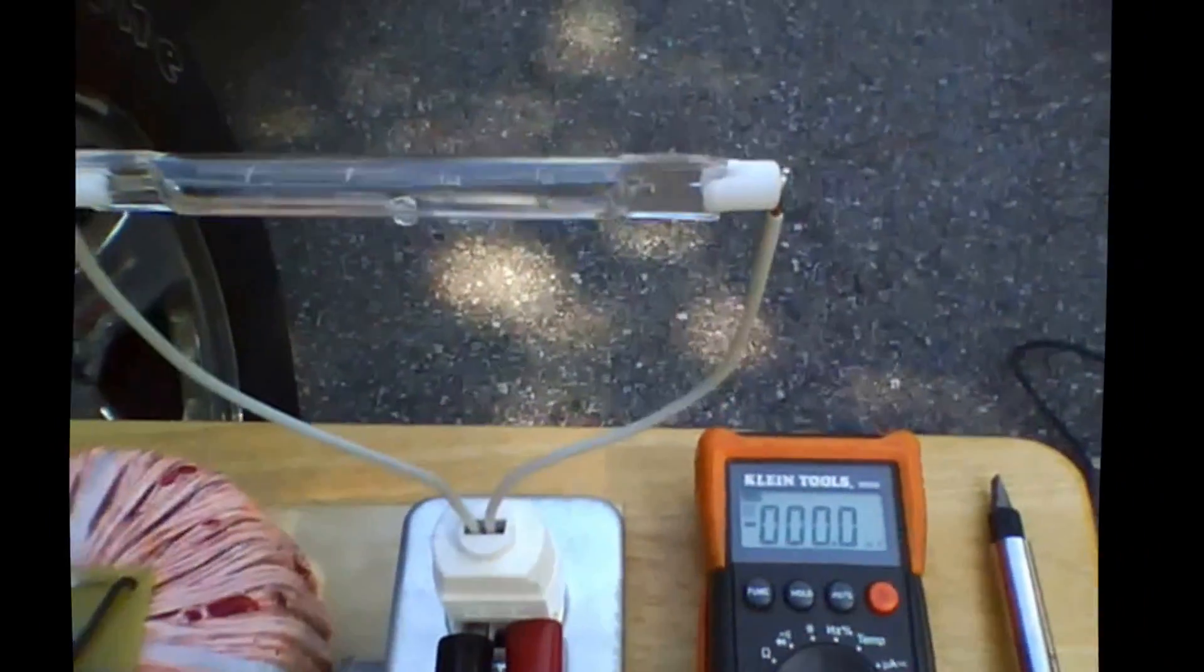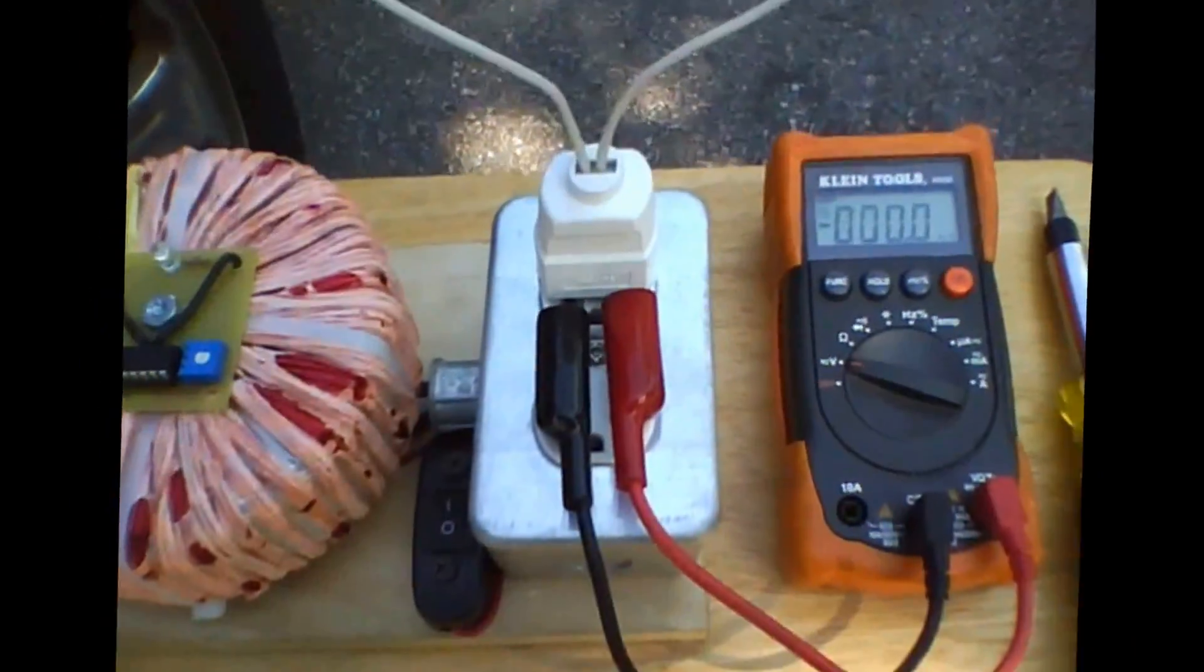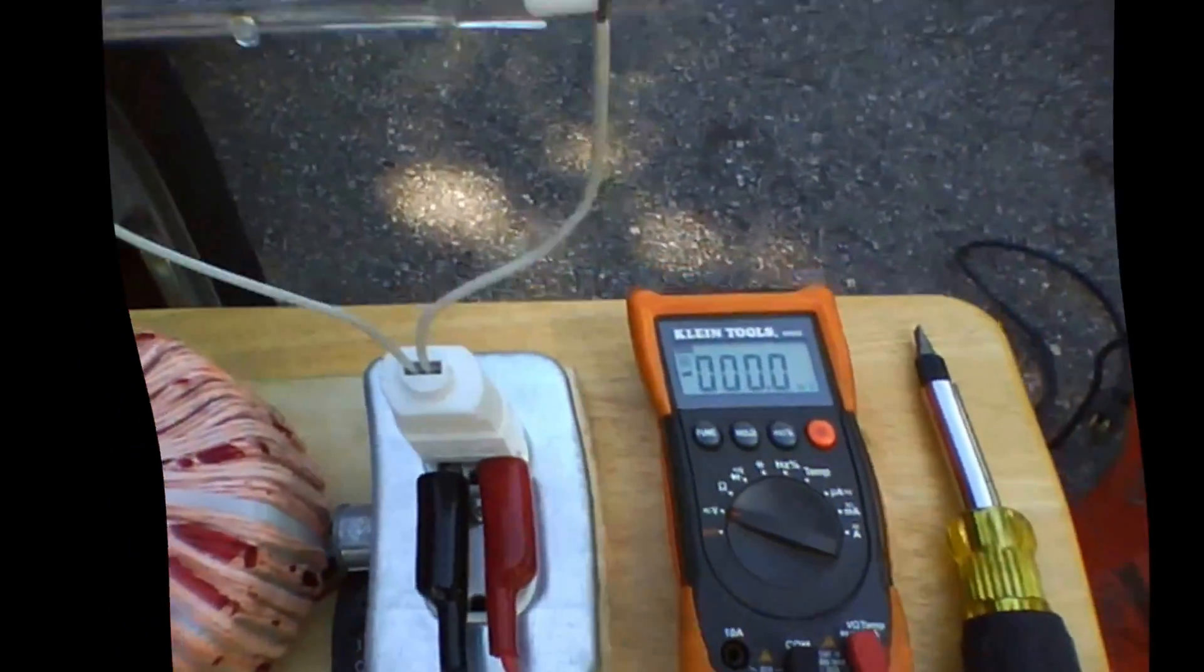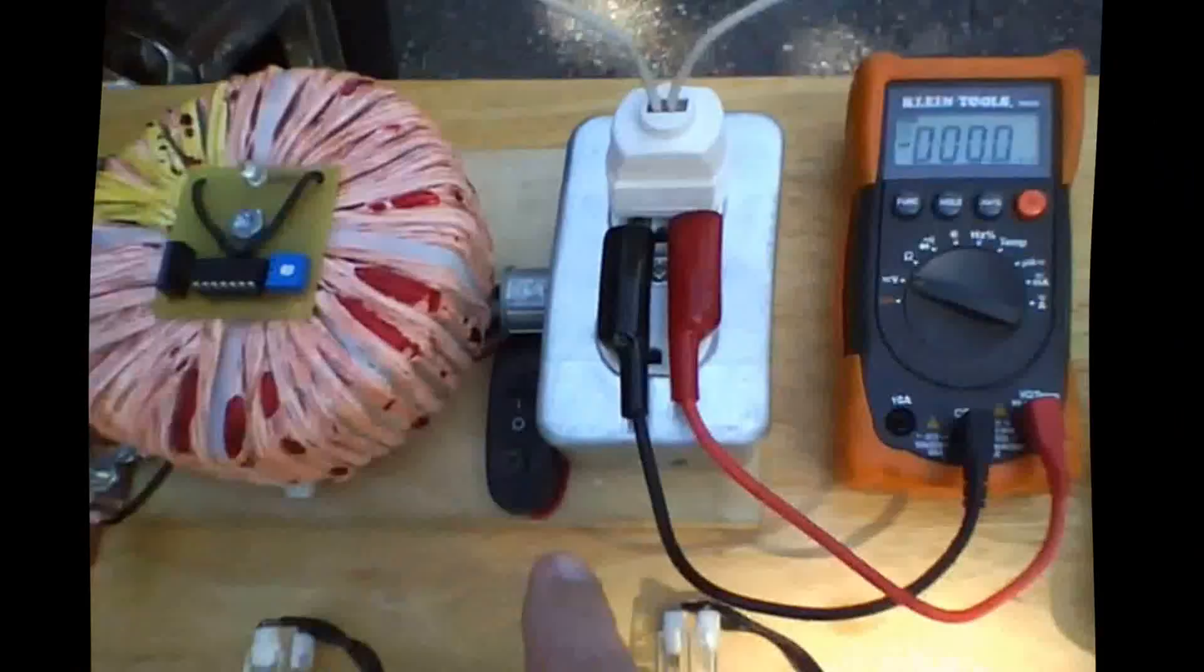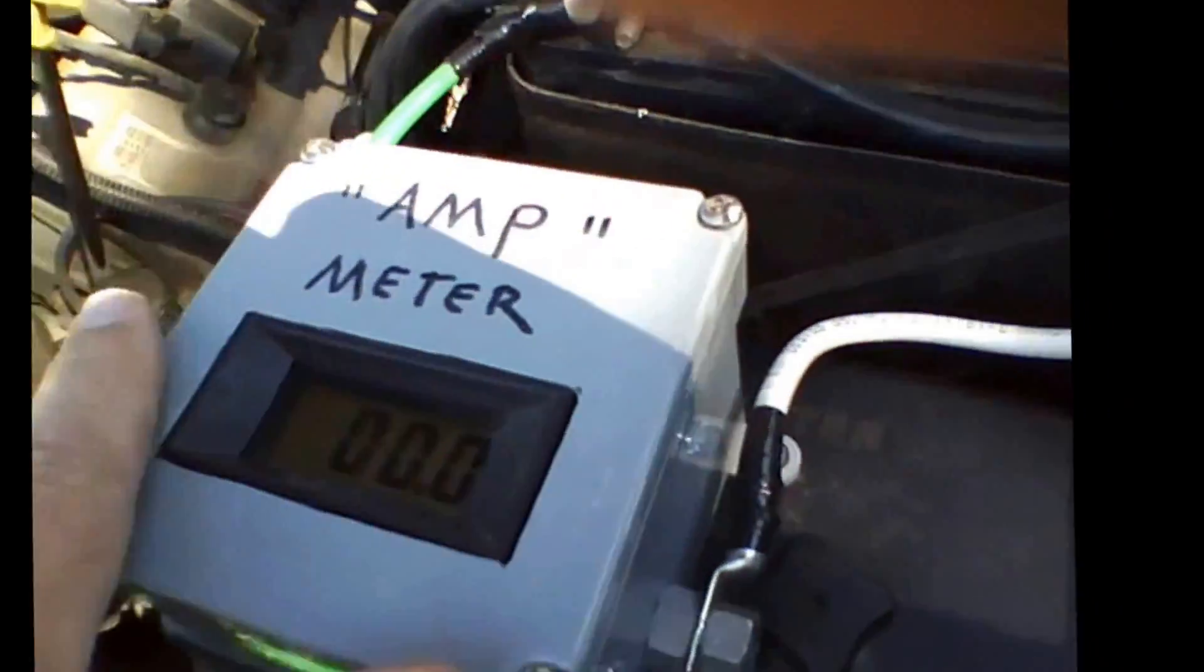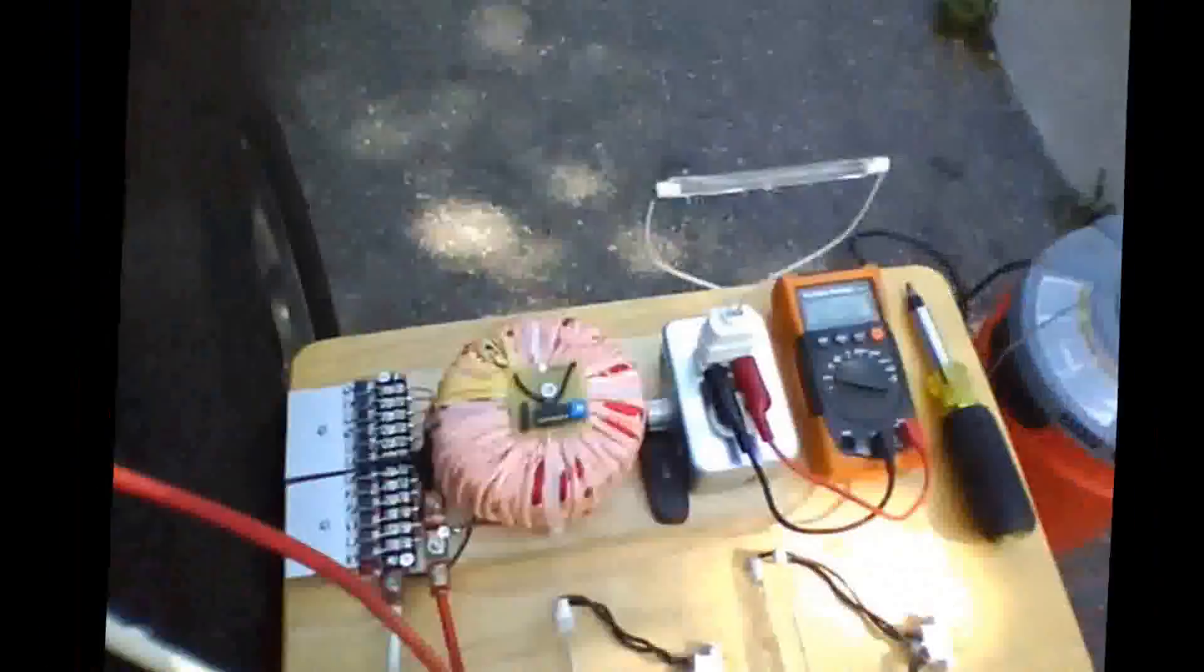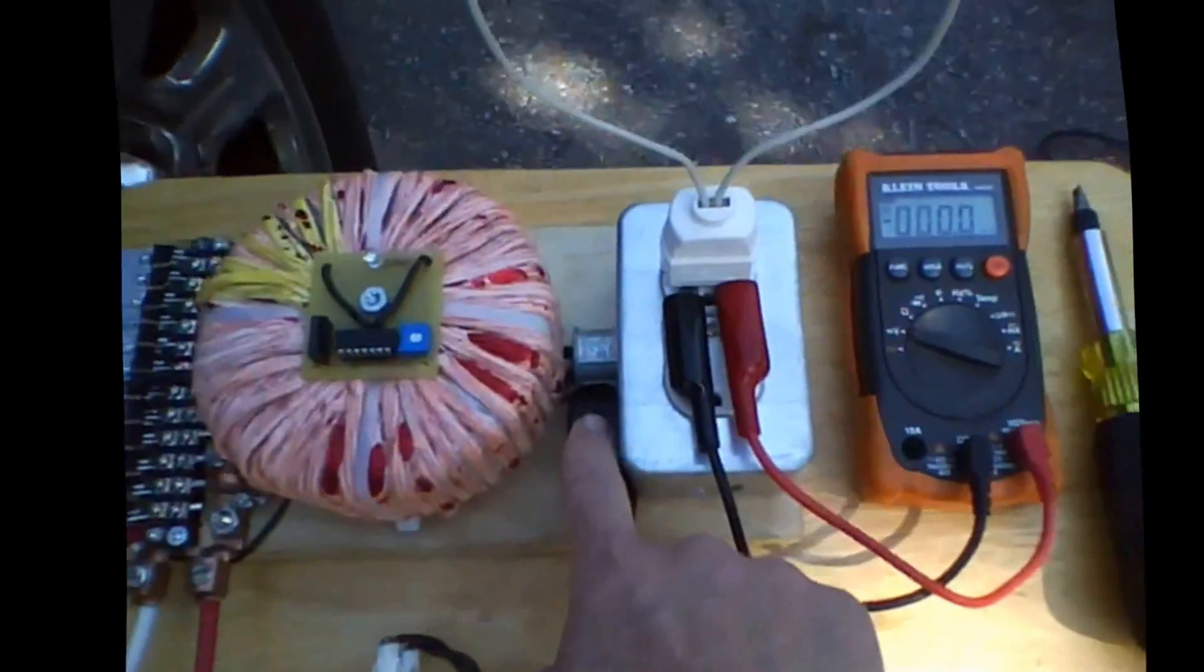Right now I just have one 500 watt halogen bulb hooked up to it and I'm going to show you what my output and everything is on it. I got it hooked up to my amp meter so I'll be able to show you the current that is drawn off my battery. Here we go.